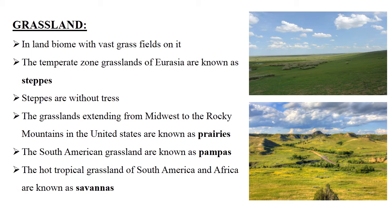The temperate zone grasslands of Eurasia — Eurasia means Europe and Asia — are known as steppes. Steppes are without trees. Steppes are a temperate environment with warm to hot summers and cool to very cold winters. Temperatures are often extreme in these conditions.